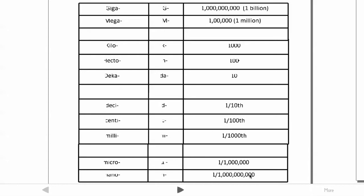On the smaller side, micro — abbreviated with a lowercase mu, a little curly symbol — means one one-millionth, the opposite of mega. Nano means one one-billionth, abbreviated with a lowercase n. When we talk about the nano scale, like a nanometer, we're talking about a billion times smaller than a meter — we'll come back to that when we discuss atoms.